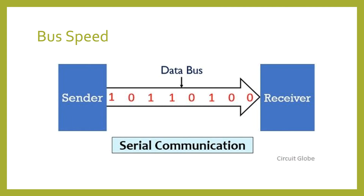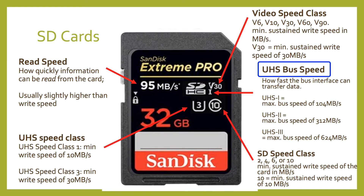Let's move on to the bus speed — how quickly data can be transferred to and from the SD card, for example from the SD card to your PC. A UHS bus speed of 1 gives a max transfer speed of 104 megabytes per second. A UHS speed of 2 gives a maximum of 312 megabytes per second. And UHS 3 gives a max speed of 624 megabytes per second.